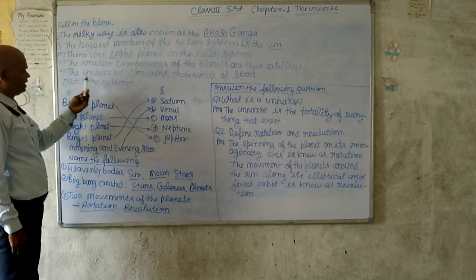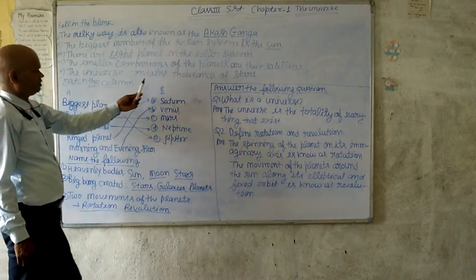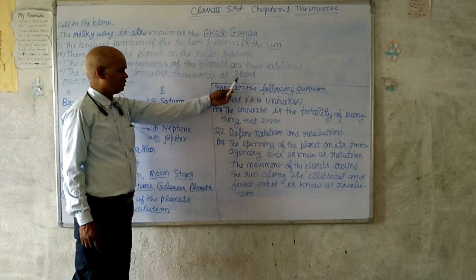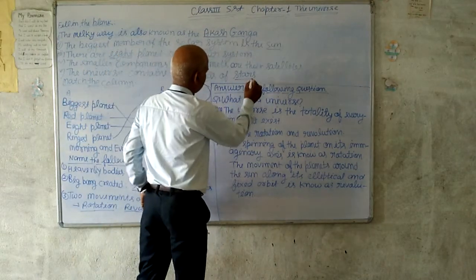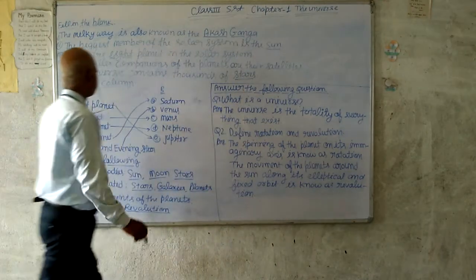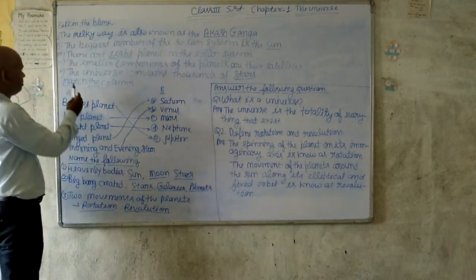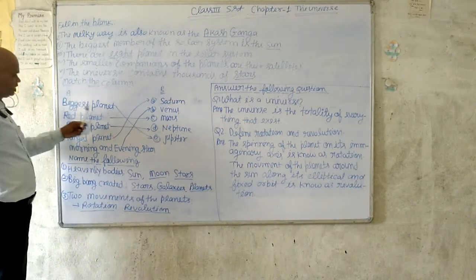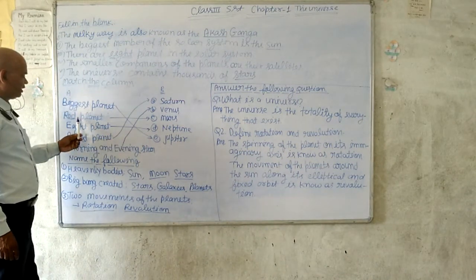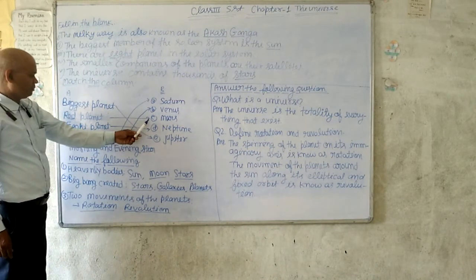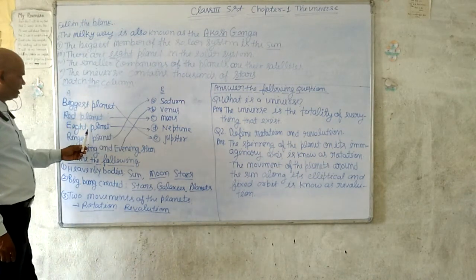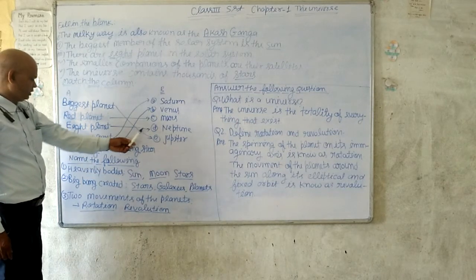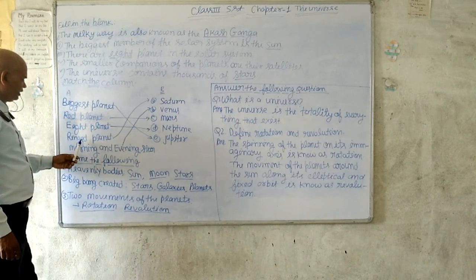The universe contains planets, stars, and other objects. The biggest planet is Jupiter, the Red planet is Mars, and other planets include Earth and Neptune.